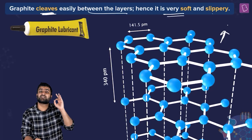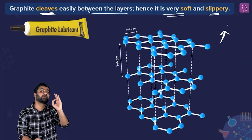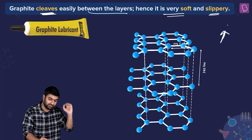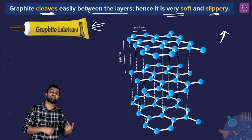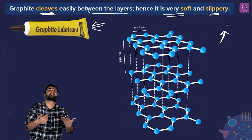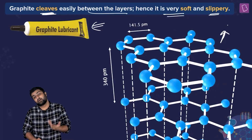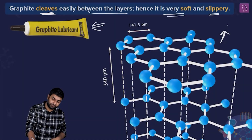Because it cleaves so easily between layers, graphite is soft and slippery — exactly what we want in a lubricant. Apart from that, it also has excellent thermal stability, making it ideal as a dry lubricant at high temperatures.